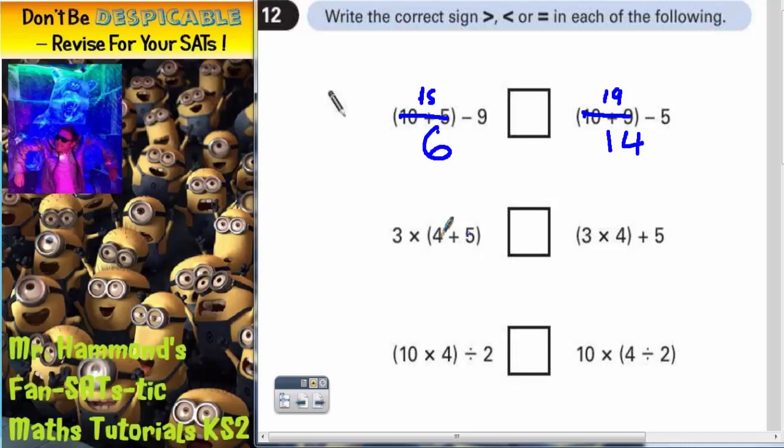We've got to do the bracket first. Even though the 3 is written first, you have to do the bracket first. So 4 plus 5 is 9. So that bracket comes to 9. So it's 3 lots of whatever's in the bracket. Well, the bracket is 9. So it's 3 lots of 9, which is 27. So this one comes to 27.